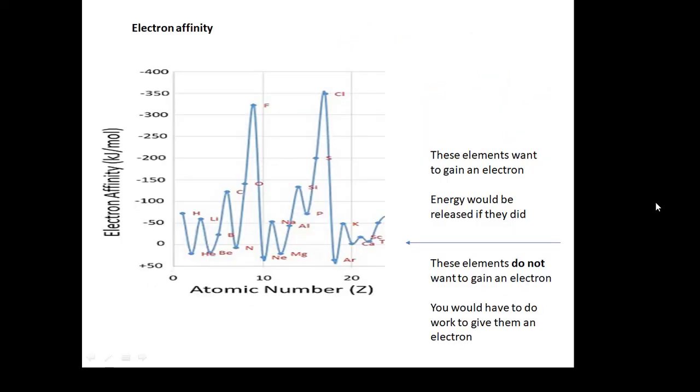Here's a graph of electron affinity against atomic number. As I said, the metals—don't worry too much about the metals, they don't want to gain. It's the non-metals that we're interested in. If they gain an electron, then energy would be released.